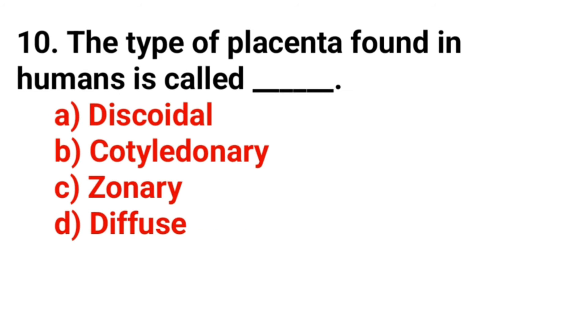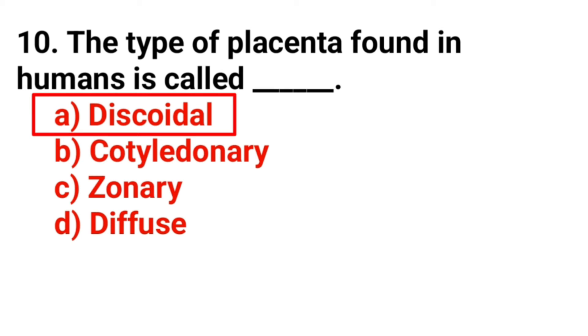Question 10: What is the type of placenta found in humans? Answer option C: 4.